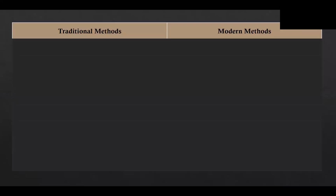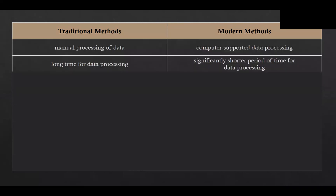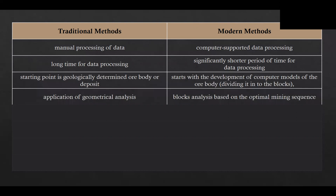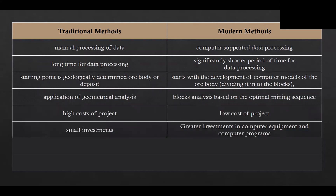This table provides a comparison of traditional and computer-based modern methods for design and modeling purposes in the mining industry. The computer-based processing of data significantly reduces data processing time. These methods start with the development of computer models of the ore body and analyze different blocks of the ore body for scheduling purposes to determine the optimal mining sequence.